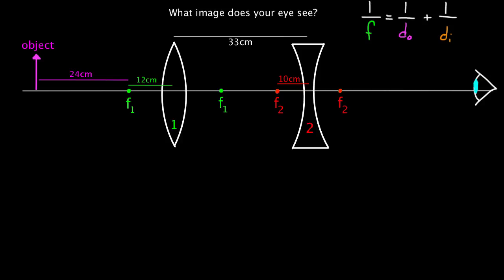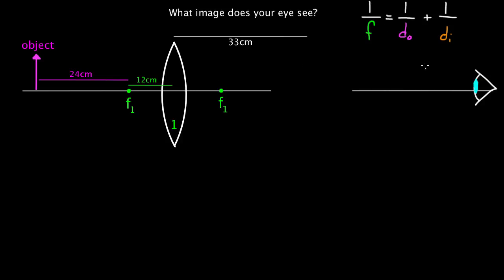First, we pretend like the second lens doesn't exist. We use the thin lens equation. One over F — so one over 12 centimeters. Do I make it positive or negative? The only thing you look at is what kind of lens this is. This is a convex lens, so my focal length is going to be positive 12 centimeters. For the object distance, all distances are measured from the center of the lens to the thing you're looking at. That's going to be 24 plus 12 — it's actually 36.